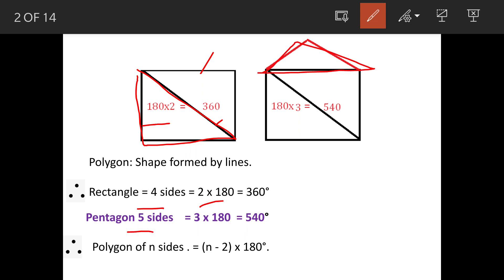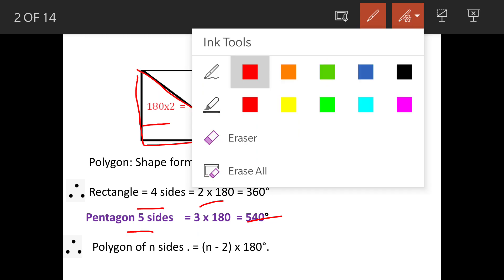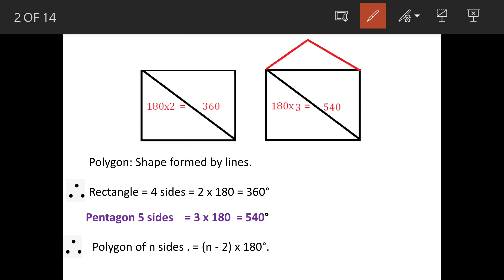So one more triangle will get added, so we have one, one here, two here, and three here. So total angles are 3 times 180 degrees, so 540 degrees in case of a pentagon which has got five sides.